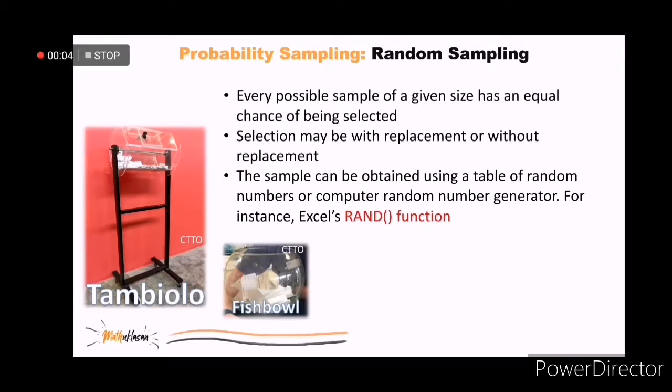Statisticians recommend selecting a probability sample when sampling from a finite population, because a probability sample allows them to make valid statistical inferences about the population. The simplest type of the probability sample is one in which each sample of size has the same probability of being selected. It is called simple random sampling. It's like selecting a winner from a raffle draw. So some use fishbowl method or tambiolo to randomly select respondents. If you wish to select 200 firms to survey from a list of 1,000 firms, if this list is entered into a spreadsheet like MS Excel, you can use Excel's random function to generate random numbers for each of the 1,000 clients on the list.